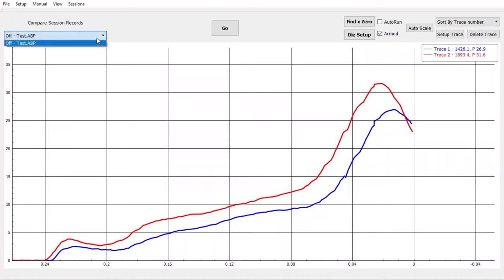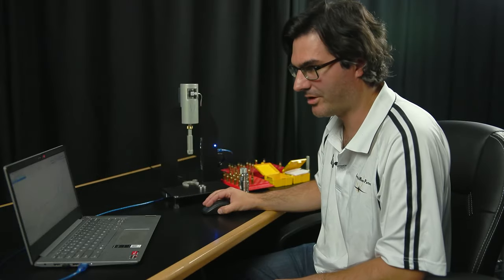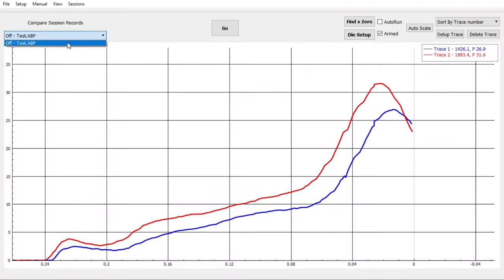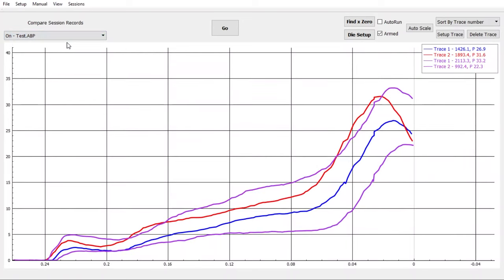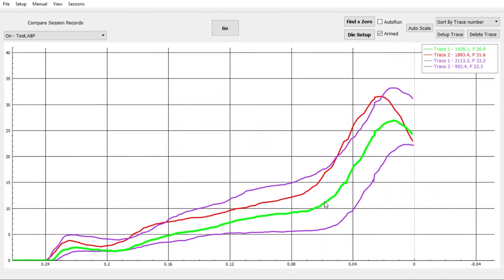There's a drop down menu here that will display all the sessions you've done ever with that rifle. In this case, it's got Test, the previous one I did, and it's got Off selected. I could turn that on, and it will display in purple the traces I did previously.